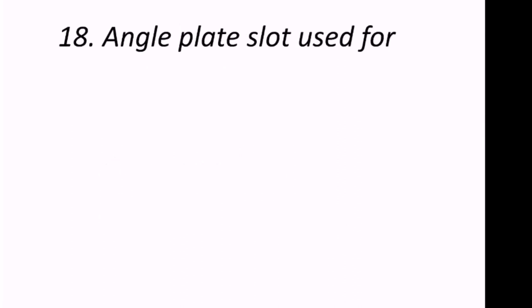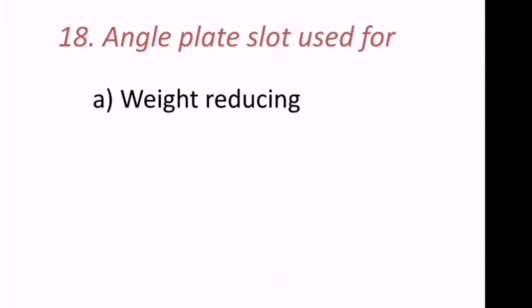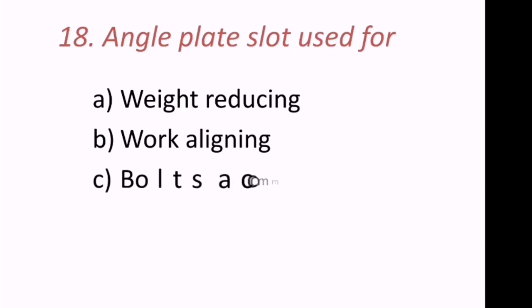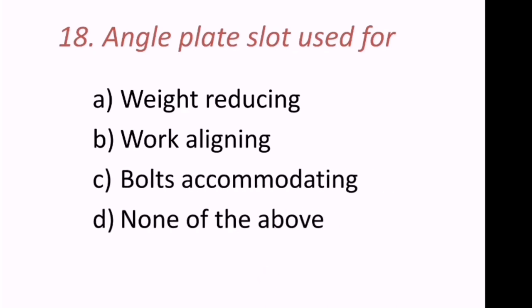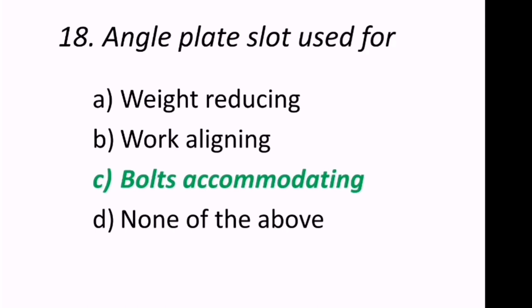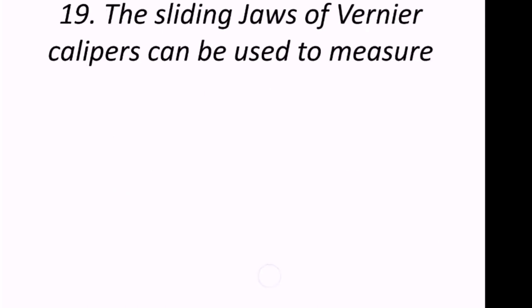Eighteenth question: An angle plate slot is used for what? The options are weight reducing, work aligning, bolts accommodating, or none of the above. The angle plate slot is used for bolts accommodation — C is the correct answer.